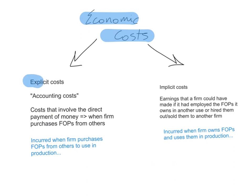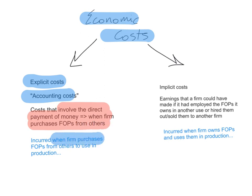Explicit costs are what we know as the accounting costs. These are the costs that involve direct payment of money, and this happens when the firm purchases factors of production from others. For example, if the firm employs a worker, that worker will be paid a wage — this is an explicit cost. If the firm buys raw materials from a supplier, the firm will pay money — again, this is an explicit cost.